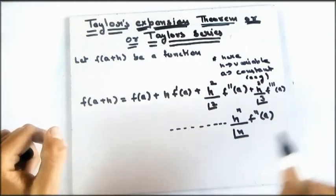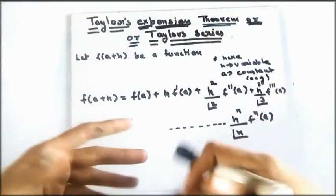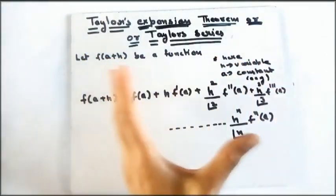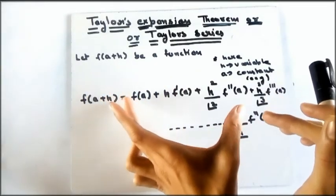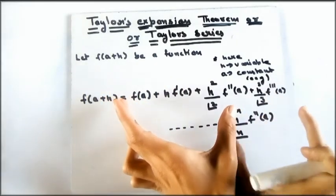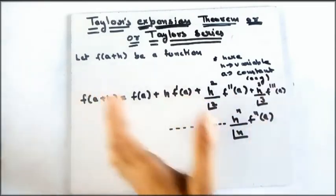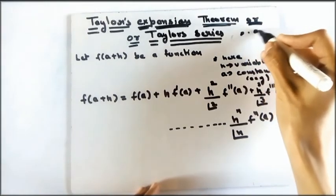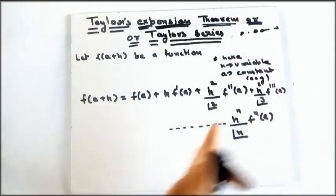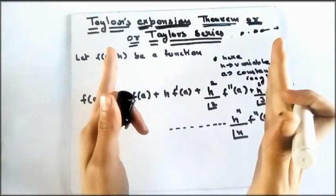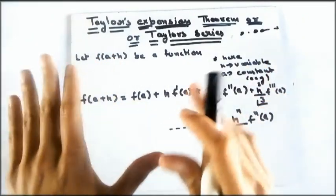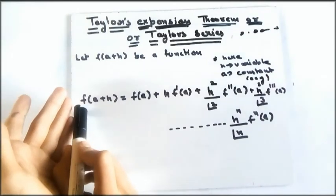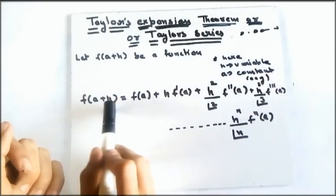This function is expanded in this form — this is how we expand any type of function using Taylor series to get its approximate value. We don't bother about higher terms because they become very small, like 0.00001, so we just take the terms of significant magnitude.